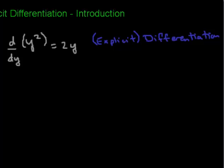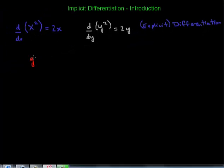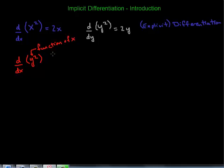Now let's take a look at a slightly different twist on this. Let's take the same y squared term, but now instead of taking the derivative with respect to y, we want to know what the derivative of y squared is with respect to x. In this case, it's implied — because we're taking the derivative with respect to x — that y squared is somehow a function of x. But that's implied; it's not really explicit. It doesn't have x's in it like we had up here.